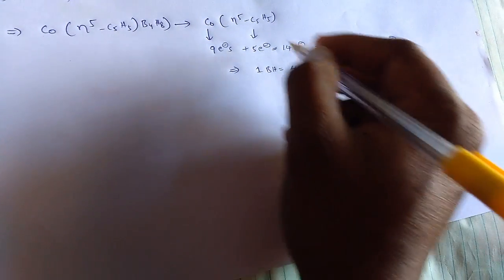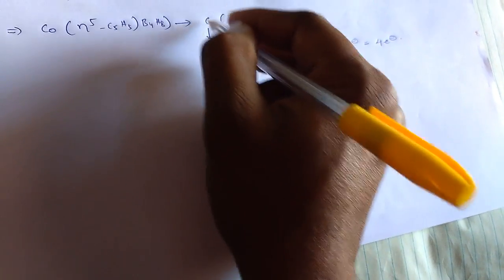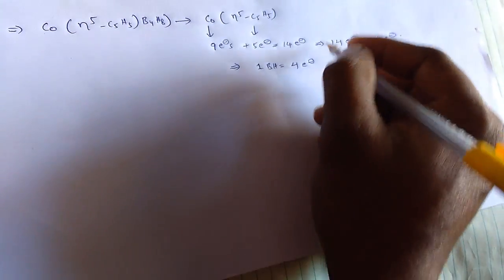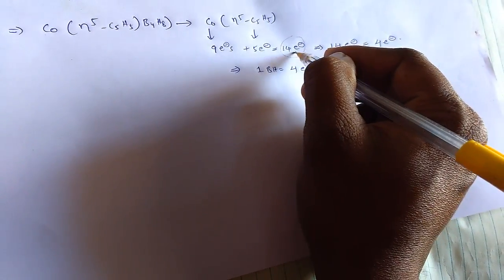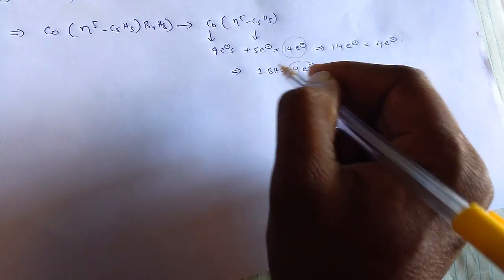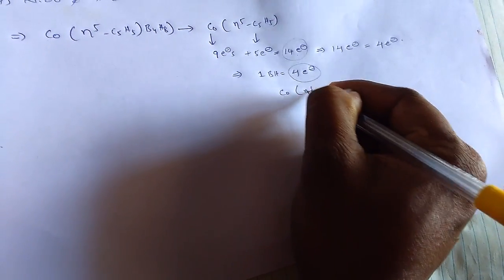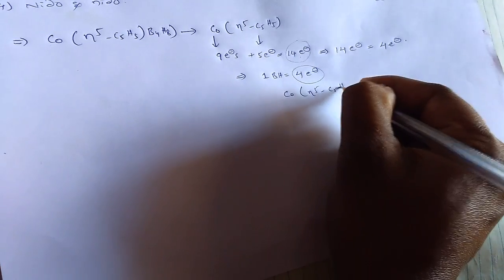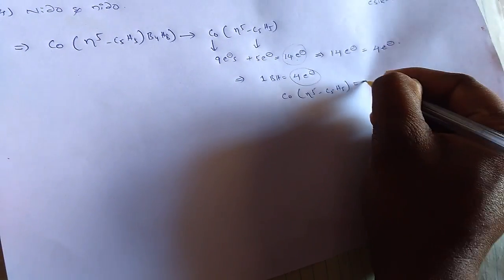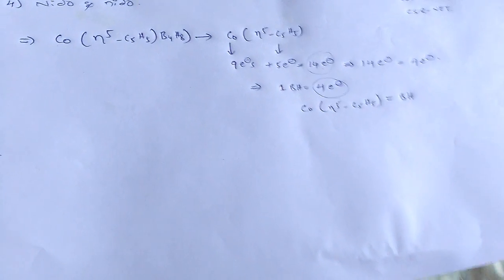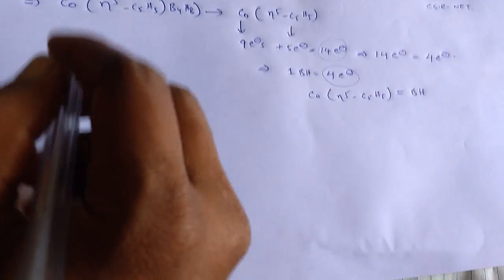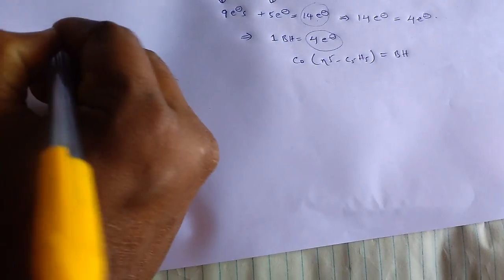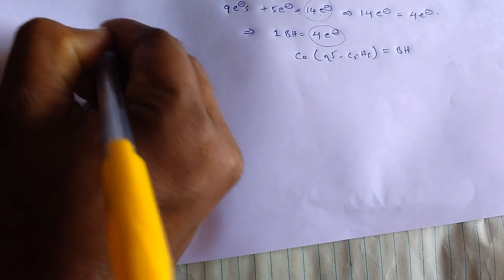So here, this total Co eta five C5H5 equals to 1 boron BH unit. Then, we have already B4H8. This total Co eta five C5H5 equals to 1 BH, so we need to add BH to it.